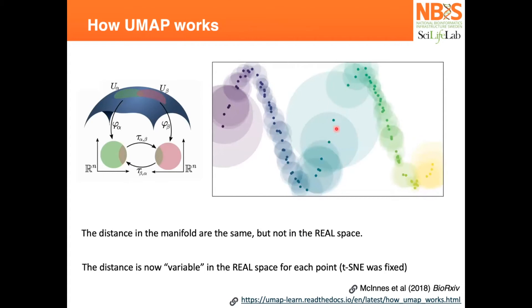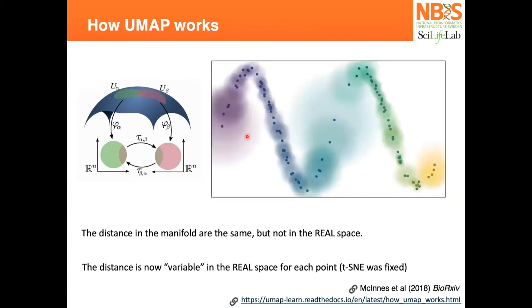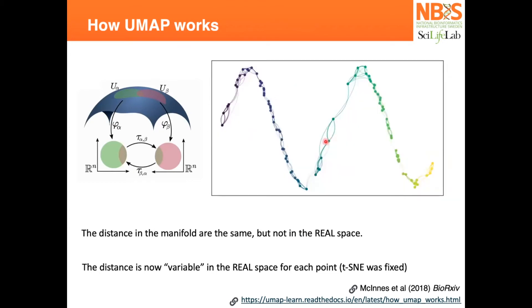Instead of using the same radius for every point, we'll now consider the distance between all the points so that every point has at least one connection or a couple of connections. You create a map that can connect all the points even though they're not physically connected.